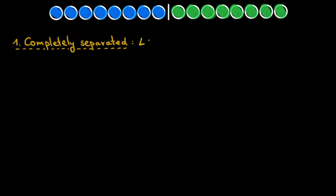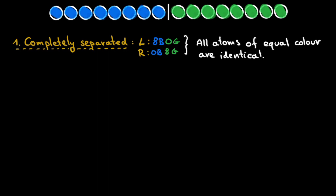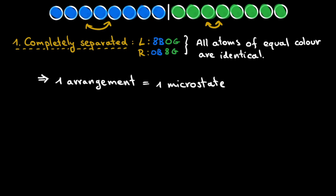The first and simplest case is a scenario where the colors are completely separated. This means that our constraint is that on the left hand side we have 8 blue atoms and 0 green atoms, and consequently on the right hand side 0 blue atoms and 8 green atoms. Now, colors of an equal color are identical — swapping 2 green atoms or 2 blue atoms doesn't change anything. Therefore, in this specific case there is just 1 arrangement that fulfills the condition, meaning this macro state only has 1 microstate.